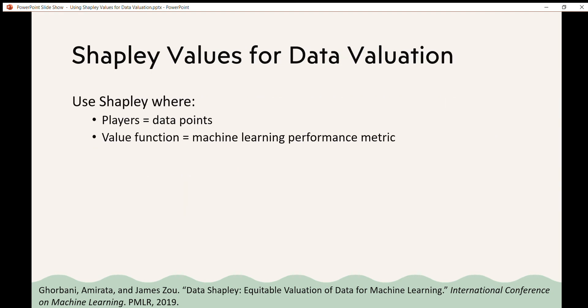D is the fixed training set and phi i is the data Shapley value for player i. So to use Shapley values for data evaluation, we can apply the ideas of Shapley values where the players are the data points and the value function is the machine learning performance metric. Why might we want to do this? Shapley values have equitability properties and so using the Shapley values equation with data maintains those equitability properties. This is something that other data evaluation methods like leave one out don't have.